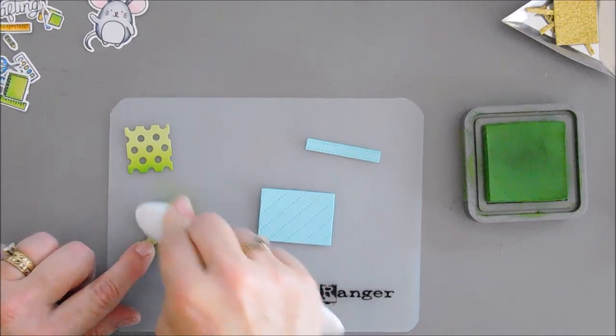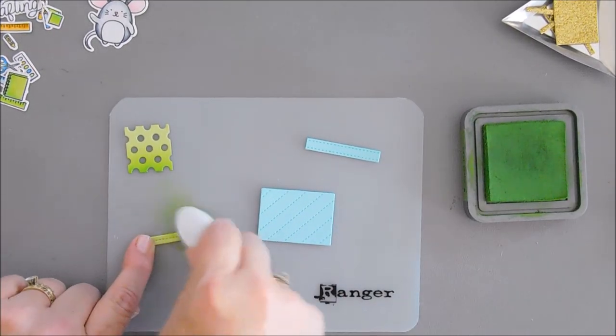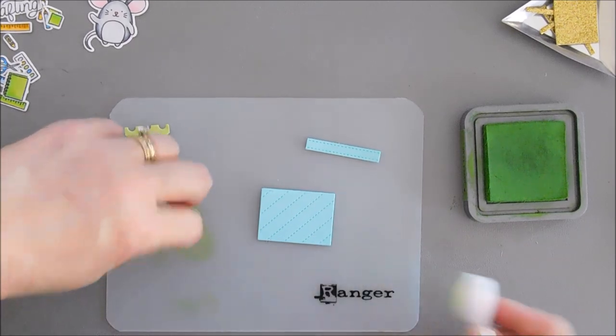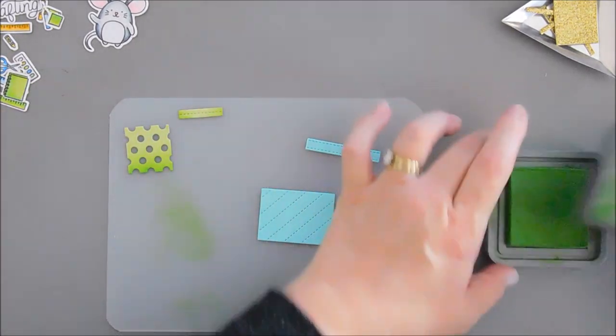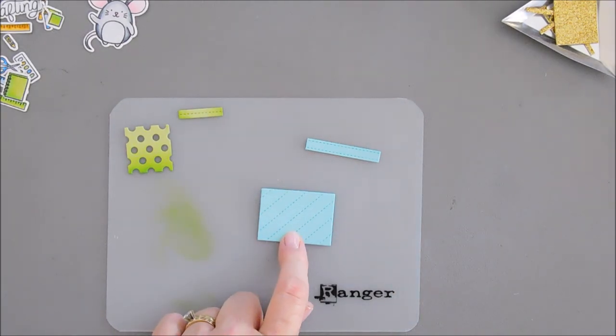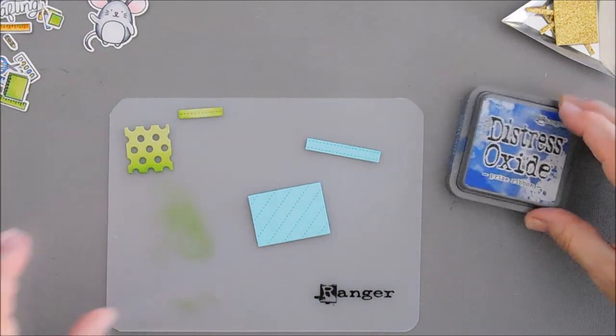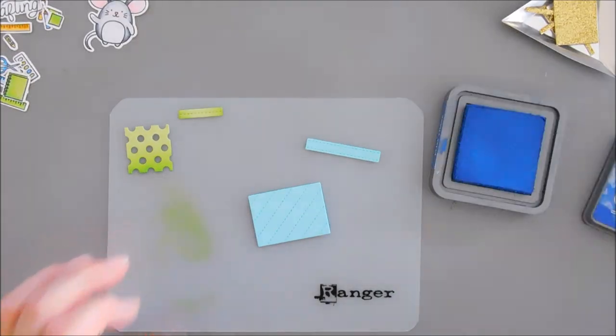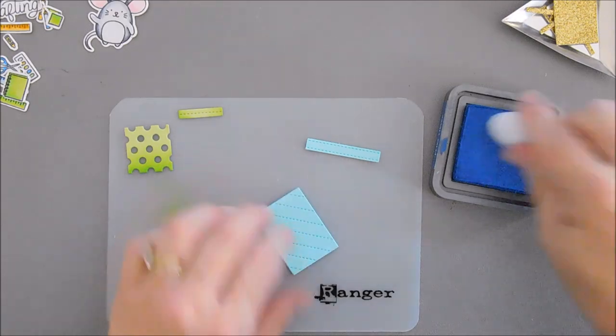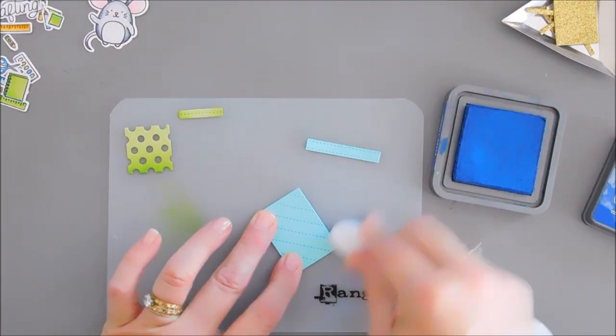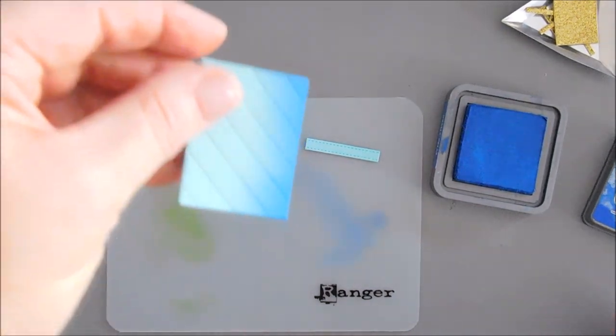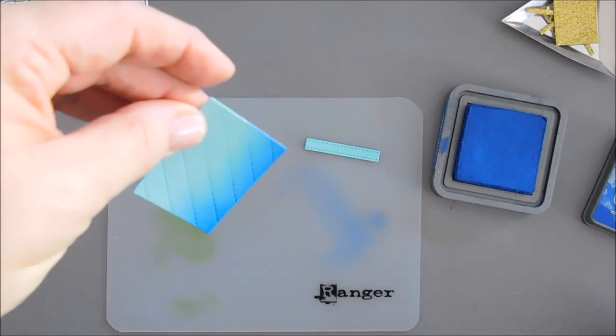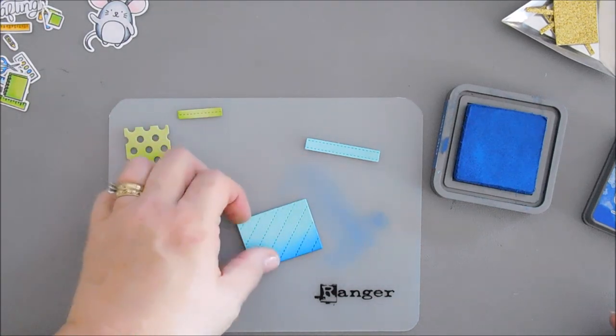And then for the little stitched pieces, these are the present tops. I'm going to do the left and right of this one. For my teal colored present, I wanted it to stand out a little bit more, so we're using Prize Ribbon. And I'm going to use a blending brush, and we're going to add some color to the bottom of this one. And kind of fade up. When you do this in their stitch detail, the stitch detail really pops out. I really like that.